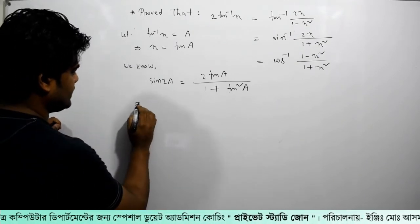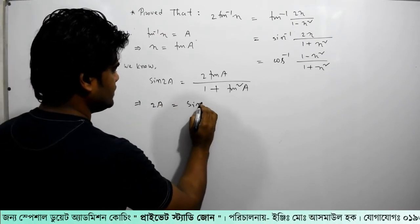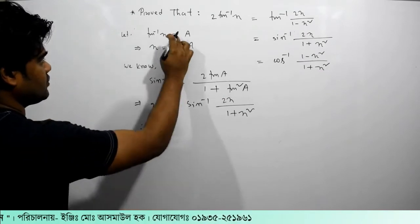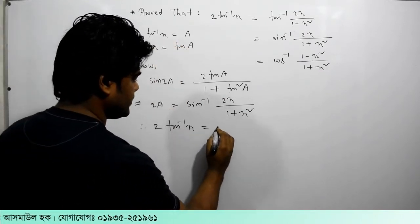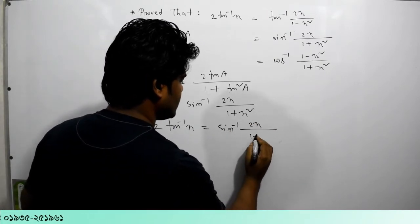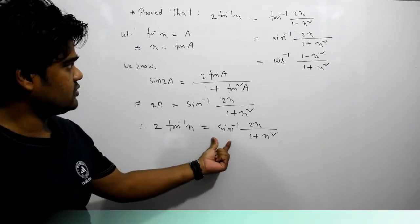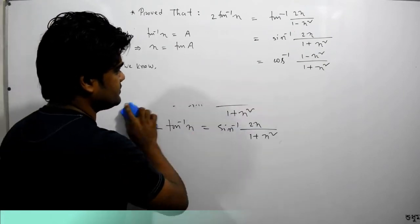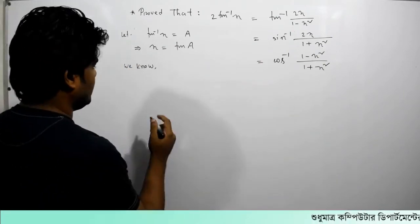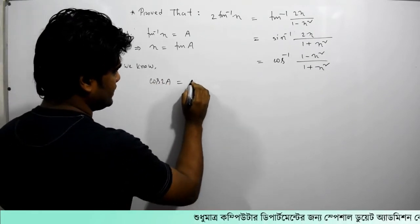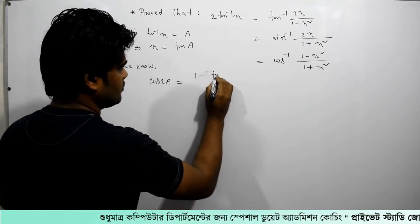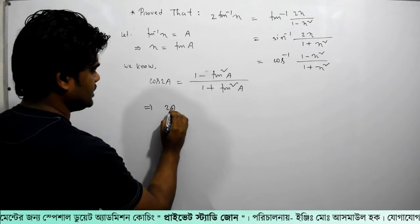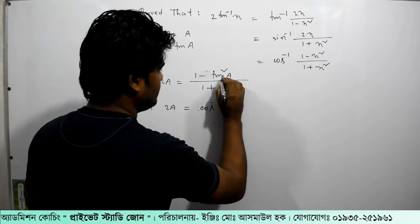sin 2a is equal to sin inverse. And tan inverse x is equal to sin inverse 2x divided by 1 plus x squared. 2 tan inverse x is equal to sin inverse 2x divided by 1 plus x squared.